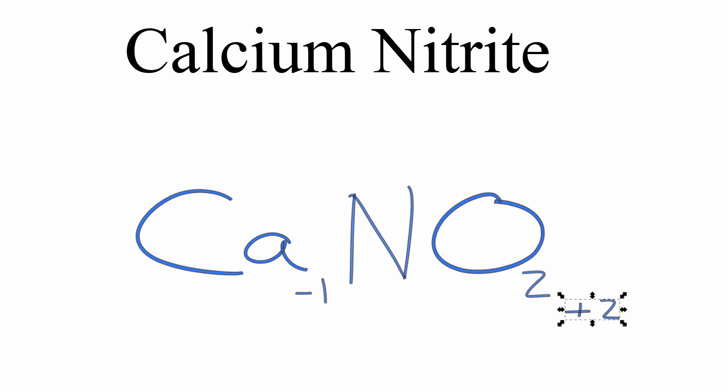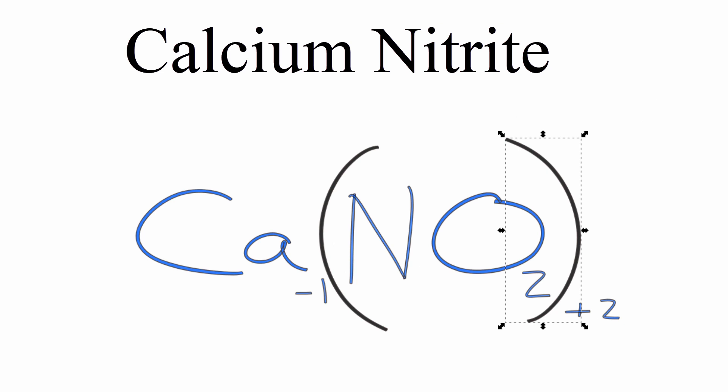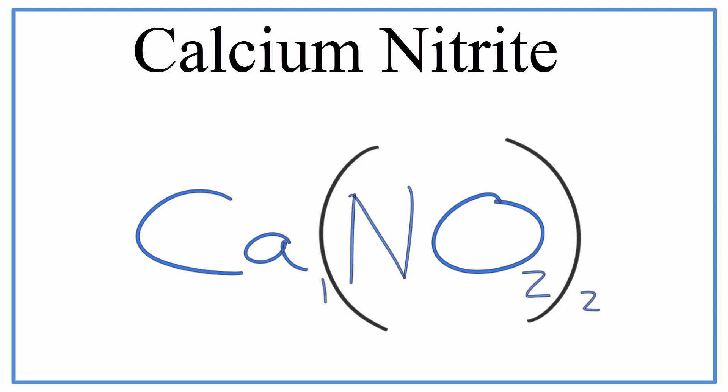Because I have this whole nitrite ion and the plus 2, I want to put parentheses around that, and then I need to remove the plus and minus charge signs. I'm also going to remove the 1 after the calcium, because it's implied. So now I have calcium, and then in parentheses the nitrite, with the 2 on the outside.